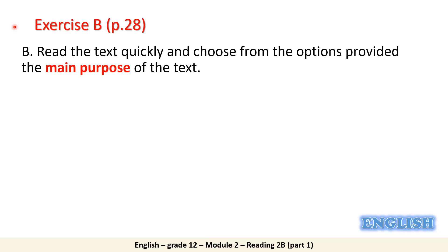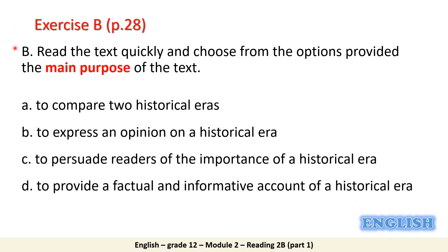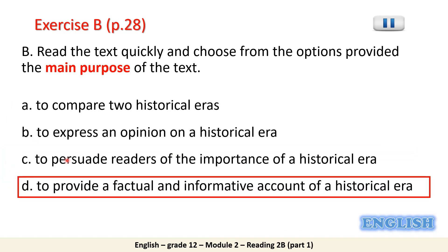Moving on to Exercise B, page 28. Take some time to read the question and answer — pause the video now. The question is asking you to choose the main purpose of the text, or the main reason why the text is written. The answer is option D: the purpose is to provide facts and information about a certain historical era — the Golden Age of Islam.